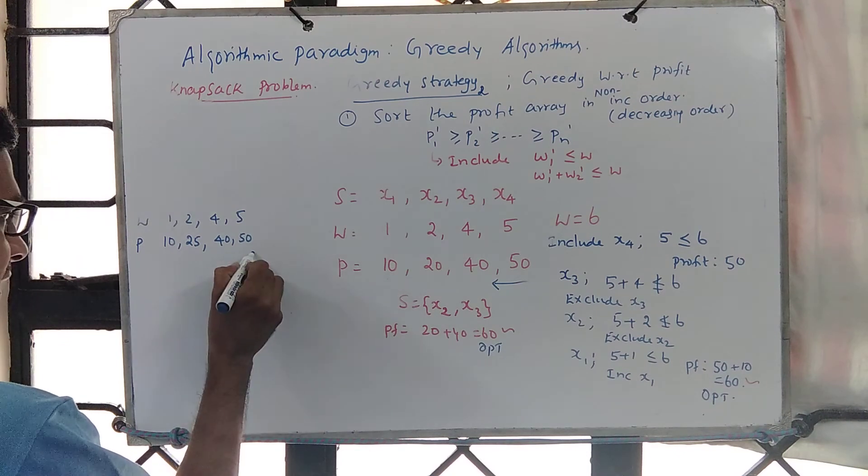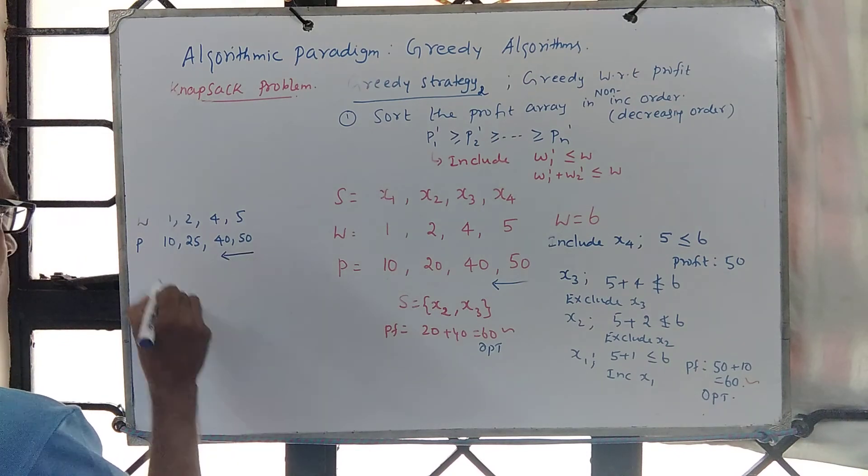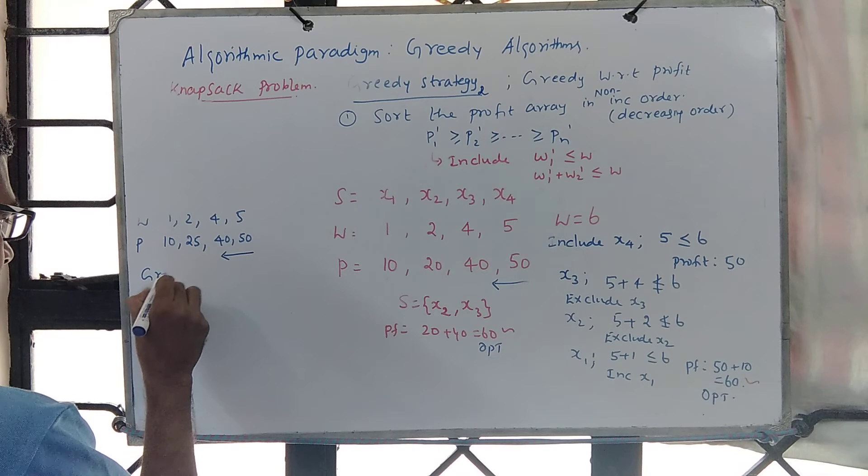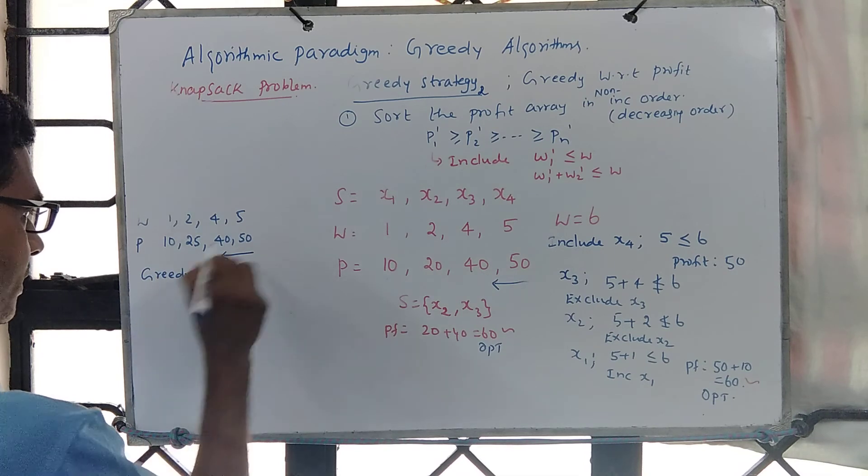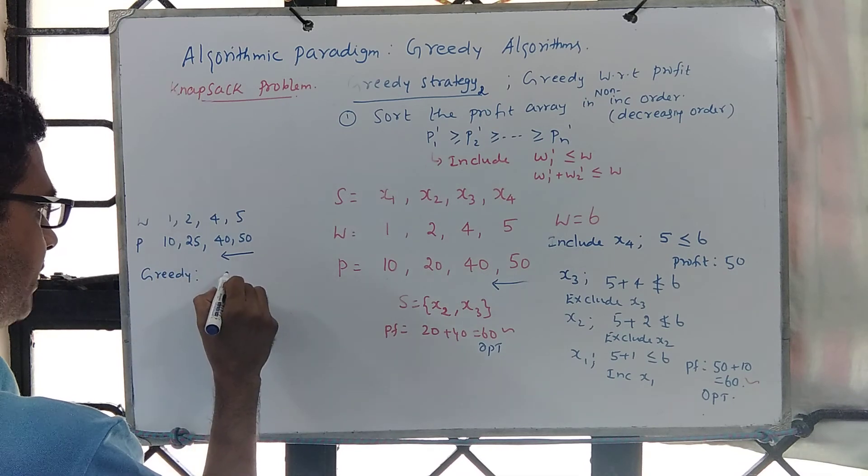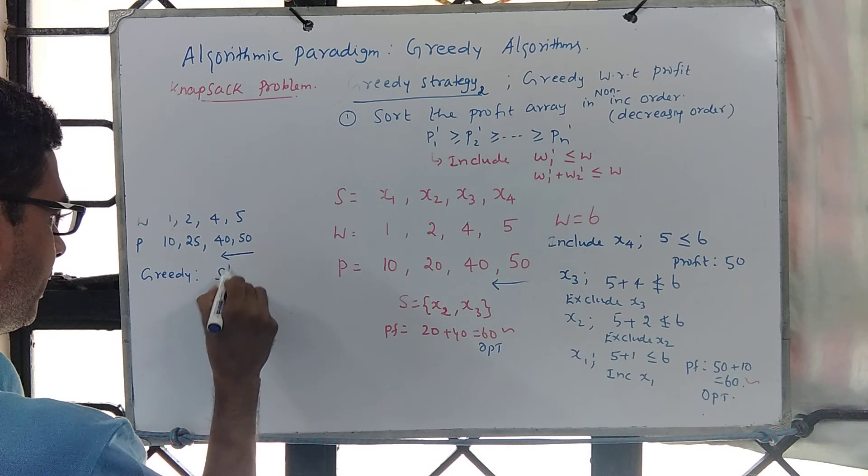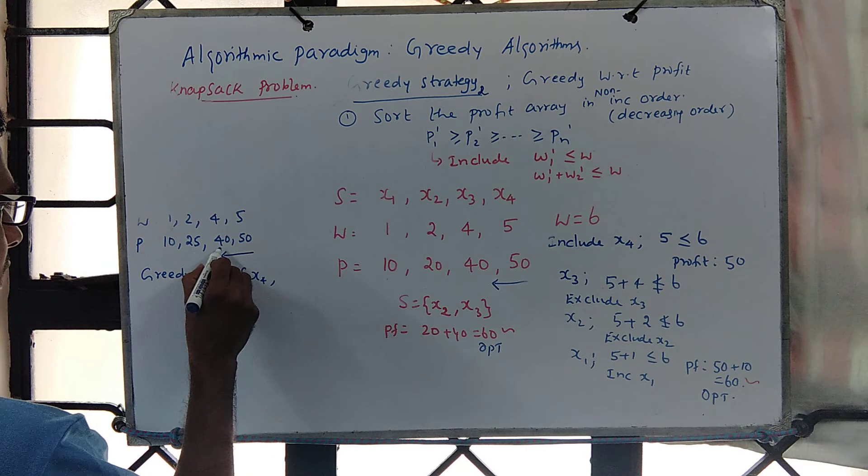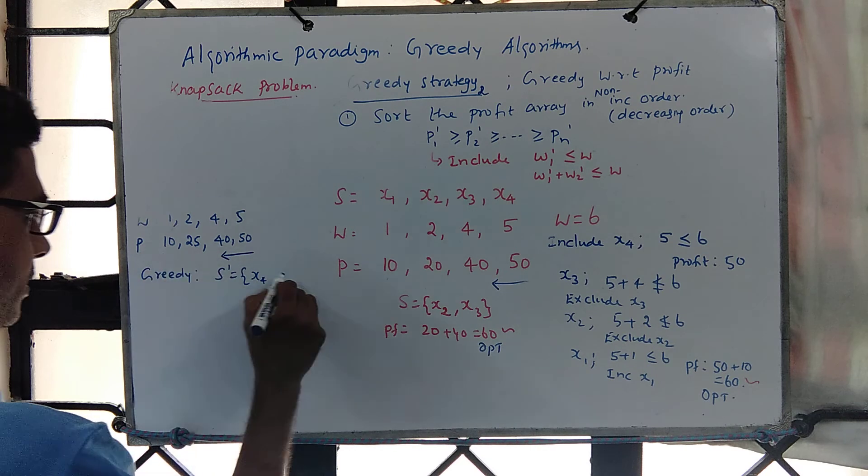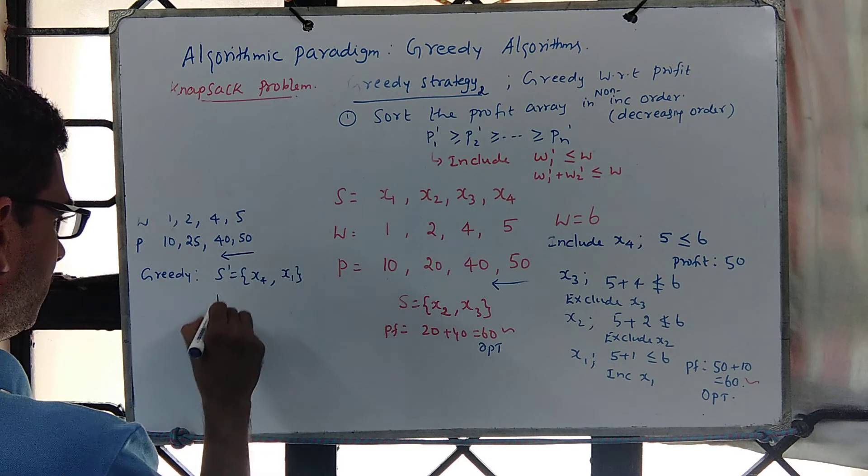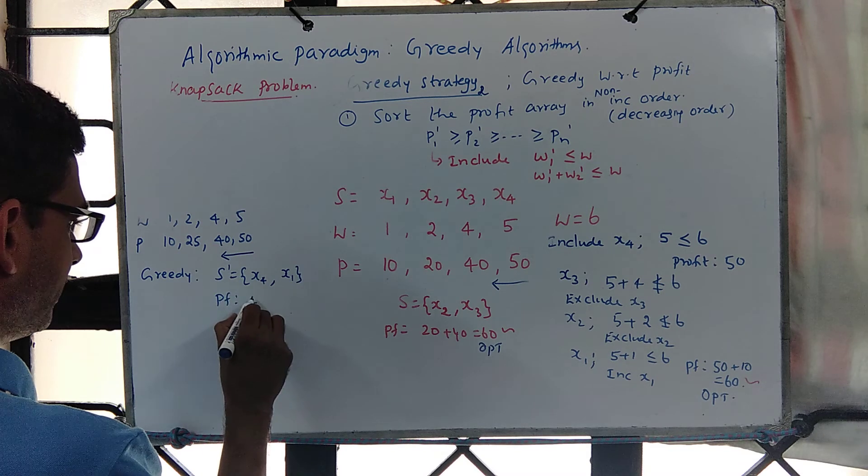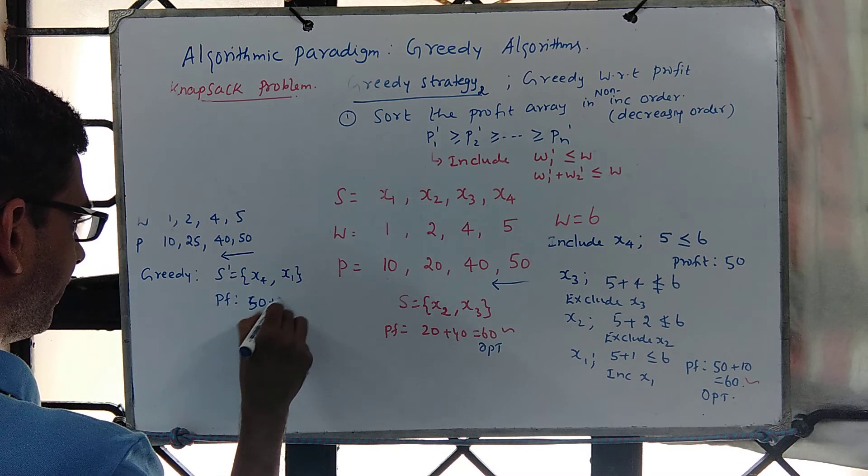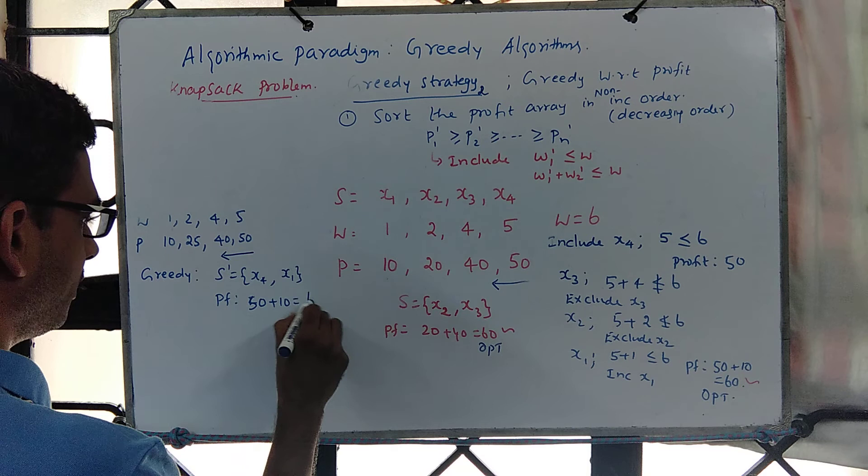Now again, if you follow our greedy strategy, our greedy will give you this as the solution. It says include x4, then it will not include this, it will not include this, it will include x1. So now profit earned is 50 plus 10, which is 60.